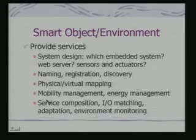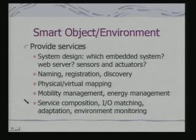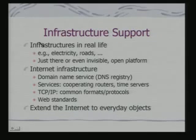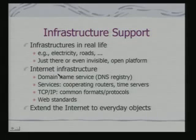Related to this are technology issues: mobility management, energy management, how to combine different services, what I/O modality to use, whether the whole system can be adaptive, and whether you can really have environment monitoring. These are different kinds of issues related to creating a smart object or smart environment. The basic infrastructure — electricity, roads — is almost invisible today. We really do not realize there is electricity and there is a road unless something fails. Similarly, the basic infrastructure here is internet infrastructure, extended to everyday objects.